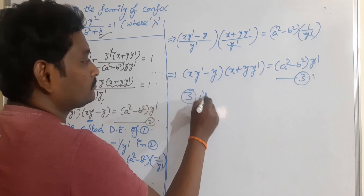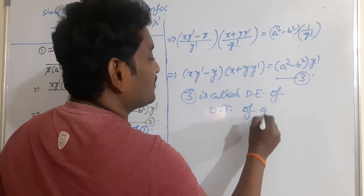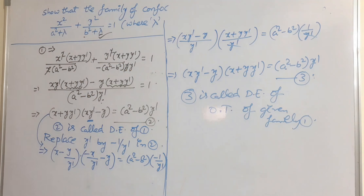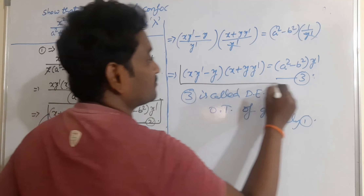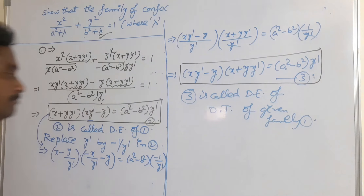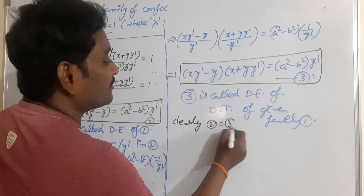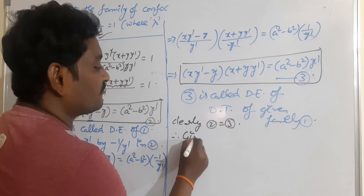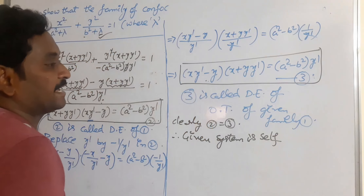Equation (3) is the differential equation of the orthogonal trajectories of given family (1). Clearly, equation (2) and equation (3) are the same. Therefore, the differential equation of the given family and the differential equation of its orthogonal trajectories are identical, which proves that the given system is self-orthogonal. It is not necessary to solve this equation further.